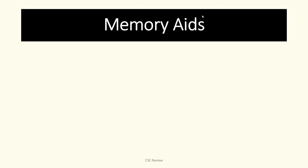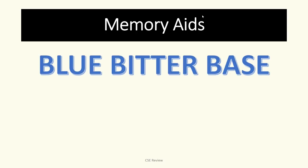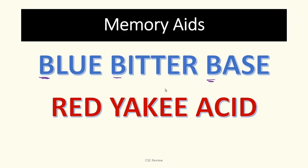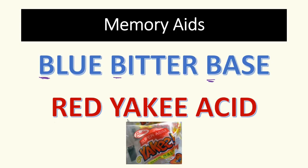Here are some memory aids. First: 'Blue, bitter, base' — it all starts with the letter B. Base turns red litmus paper blue, it tastes bitter, and it is a base. Second: 'Red, yaki, acid' — yaki because it tastes super asim or sour, like yaki. It turns blue litmus paper to red, and red stays red with no change. Whatever is easier for you to remember — use it!